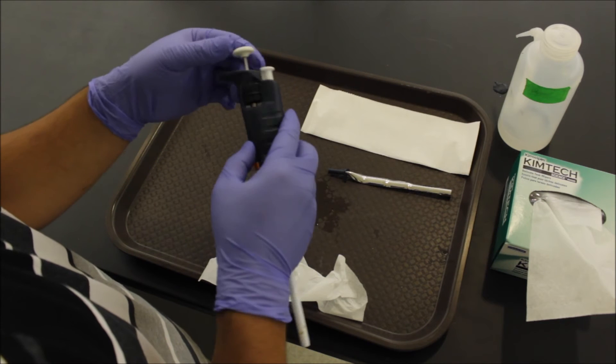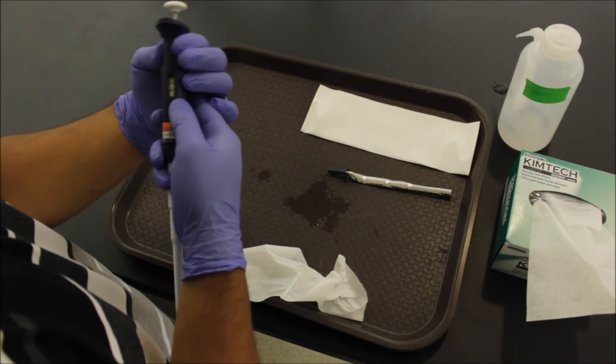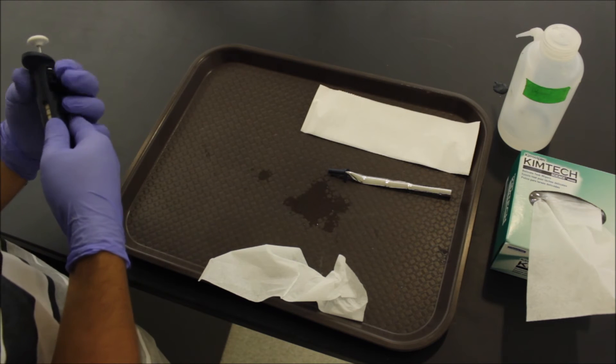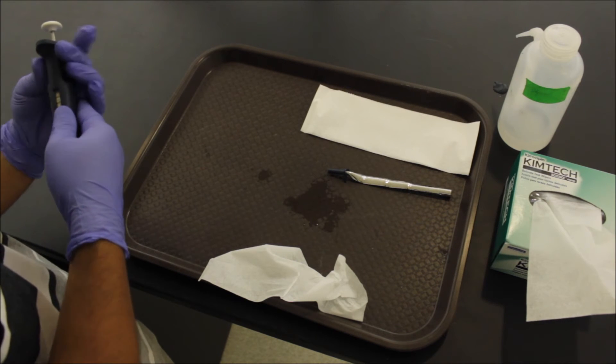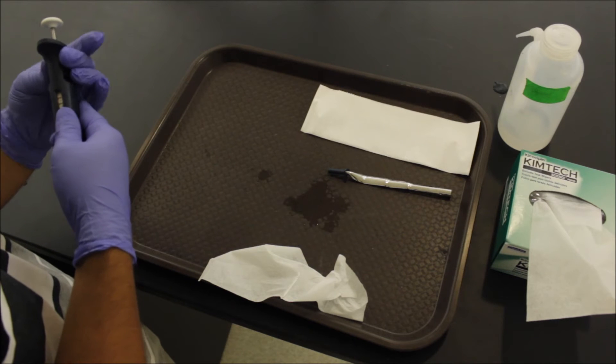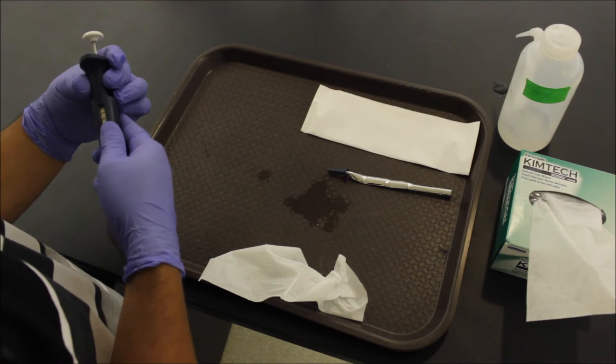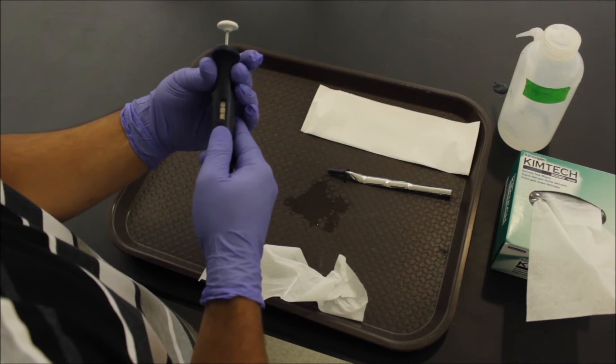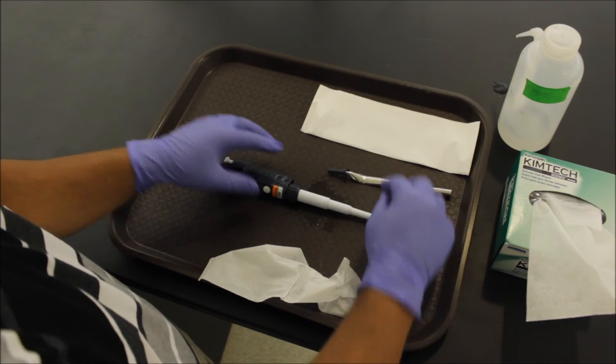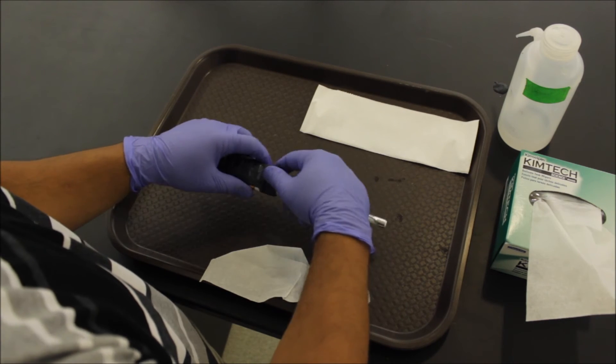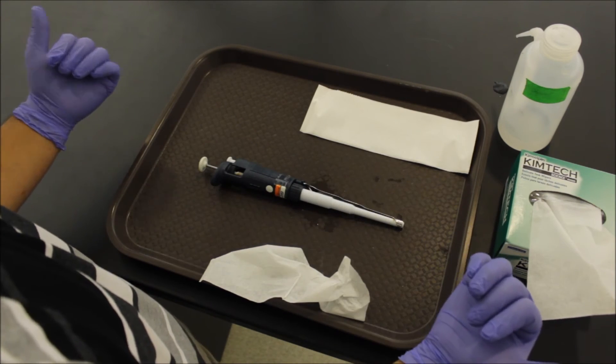All right, we're going to take a second to make sure the dial still works. So we can give that a couple turns. Now we'll set it back to 1,000. Once that's done, we'll just reattach the ejector. Push that back into place. Just like that, you got it done.